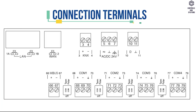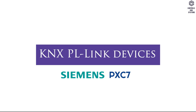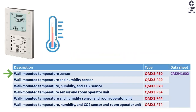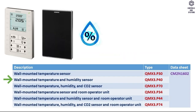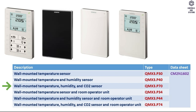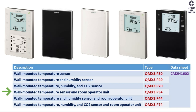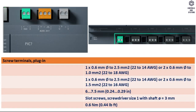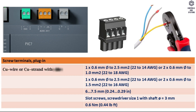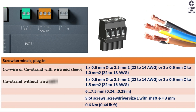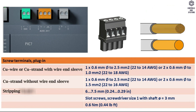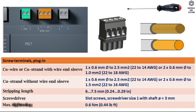Connection Terminals: KNX PL Link Devices include the Wall-Mounted Temperature Sensor, Humidity Sensor, CO2 Sensor, and Room Operator Unit; types and data sheet details are shown in the table. Screw Terminals Plugin table indicates specifications and ranges of CU Wire or CU Strand with wire and sleeve, CU Strand without wire and sleeve, Stripping Length, Screw Driver Size, and Maximum Tightening Torque.